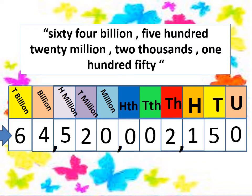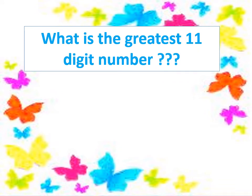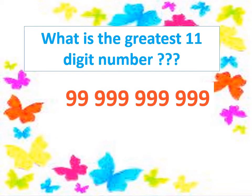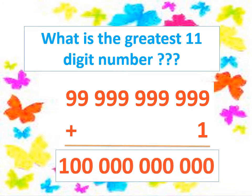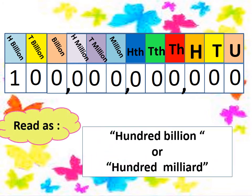Now, can you tell me what is the greatest eleven-digit number? Ninety-nine billion, nine hundred ninety-nine million, nine hundred ninety-nine thousand, nine hundred and ninety-nine. If we make plus one, we get a twelve-digit number. The place values are: unit, tens, hundreds, thousands, ten thousands, hundred thousands, million, ten million, hundred million, billion, ten billion, hundred billion. It reads as one hundred billion.